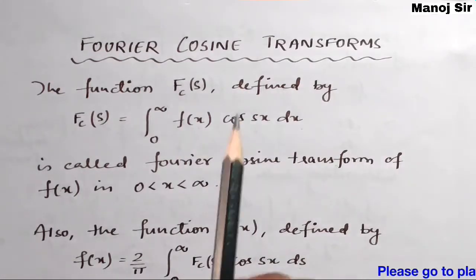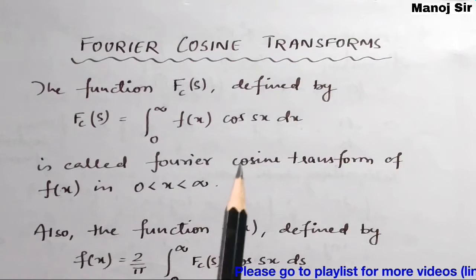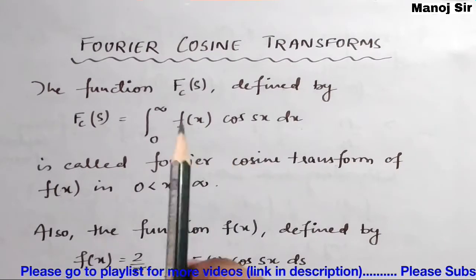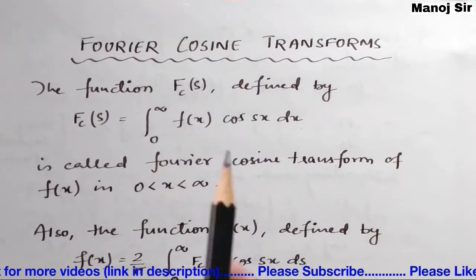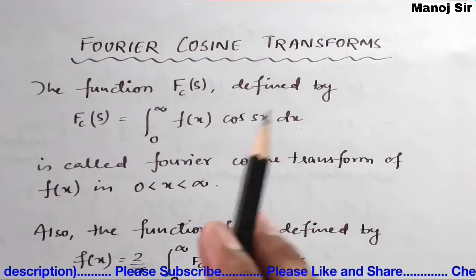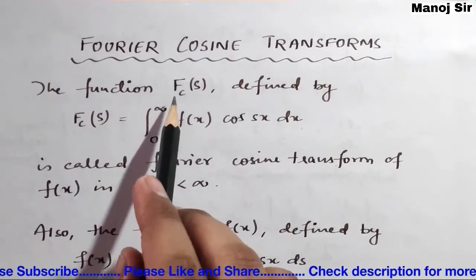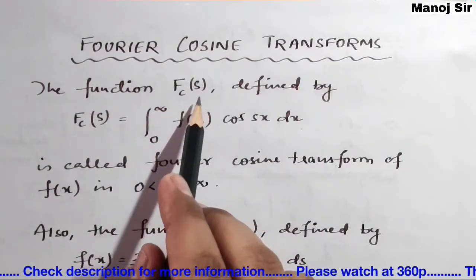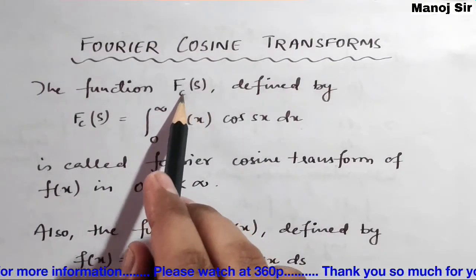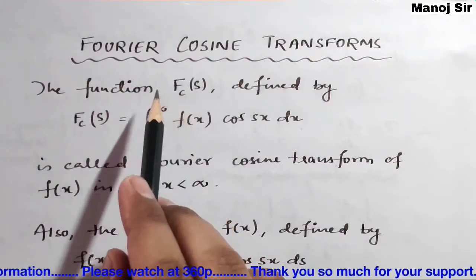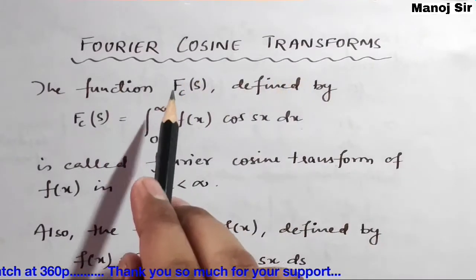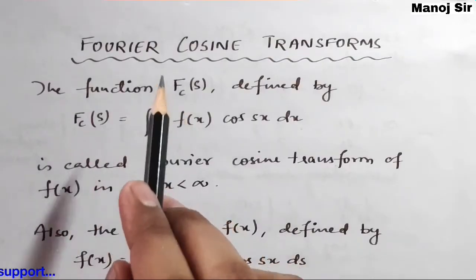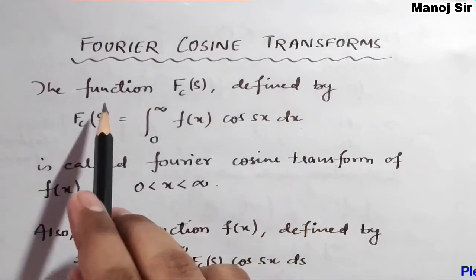Let's say you have been given any function f of x. We need to find the Fourier cosine transform for f of x, which is written as fc of s. The subscript c means Fourier cosine transform, and if the subscript s is used, then it is the Fourier sine transform.